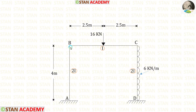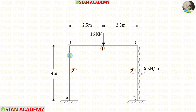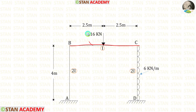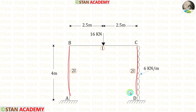In this frame, we have the columns AB and CD, and the beam BC. In column AB, there is no load. In column CD, we have a uniformly distributed load of 6 kN per meter acting towards the left side. In beam BC, we have a point load of 16 kN. The moment of inertia for the columns is 2i and for the beam it is i. The height of the columns is 4 meters and the length of the beam is 5 meters.